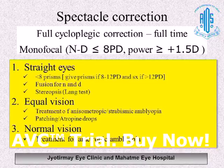Once eyes are straightened, the next aim of treatment is to achieve equal vision in both eyes. Around 30 to 40% of patients with accommodative strabismus have unilateral amblyopia, which is treated with either patching or atropine drops.